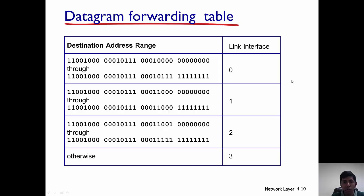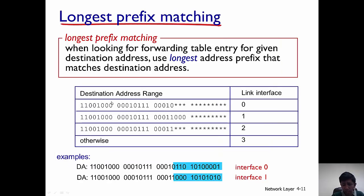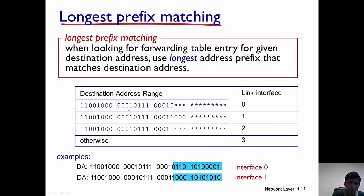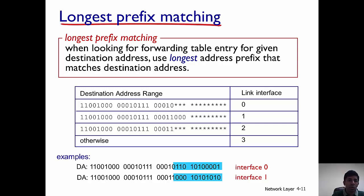So how does the router actually store this information mathematically? If you look at the previous slide, you would notice that for link interface 0 the first 21 bits are exactly the same — the two addresses differ in the last 11 bits. So we can write it in this form: the bits that are common are represented, then there is a star for the bits representing the address range, followed by the corresponding link 0.